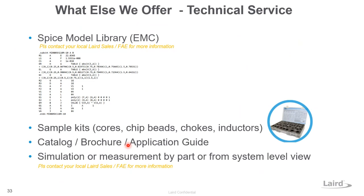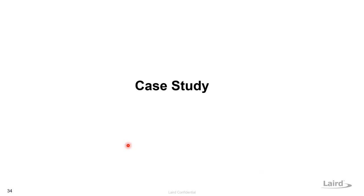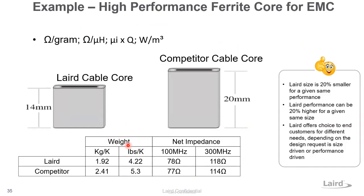In the following slides, I will take you through some successful case studies and new product snapshots from Laird. This first example is for ferrite cable cores for common mode noise suppression. Through material innovation, Laird can offer either a smaller size with the same performance, or the same size but higher performance than competitors — depending on your design needs: smaller size and lighter weight, or higher performance.